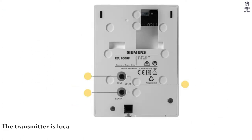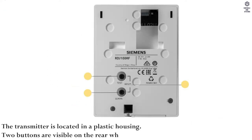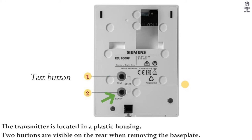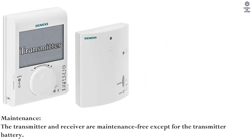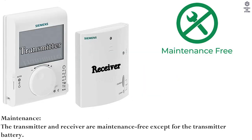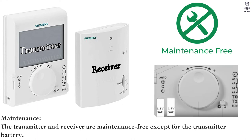The transmitter is located in a plastic housing. Two buttons are visible on the rear when removing the base plate: 1. Test button. 2. Learn button. 3. Test and learn button together for reset function. The transmitter and receiver are maintenance-free except for the transmitter battery.